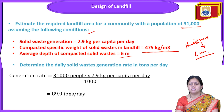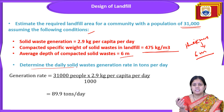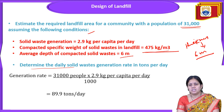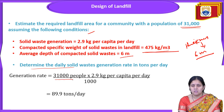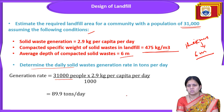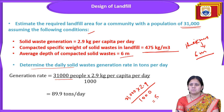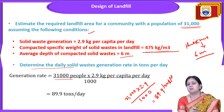With this given data, we have to estimate the landfill area. First we will calculate the daily solid waste generation rate. The generation rate is equal to 31,000 people × 2.9 kg per capita per day ÷ 1000, which gives 89.9 tons per day. So per day, 31,000 people are producing approximately 89.9 tons of solid waste.